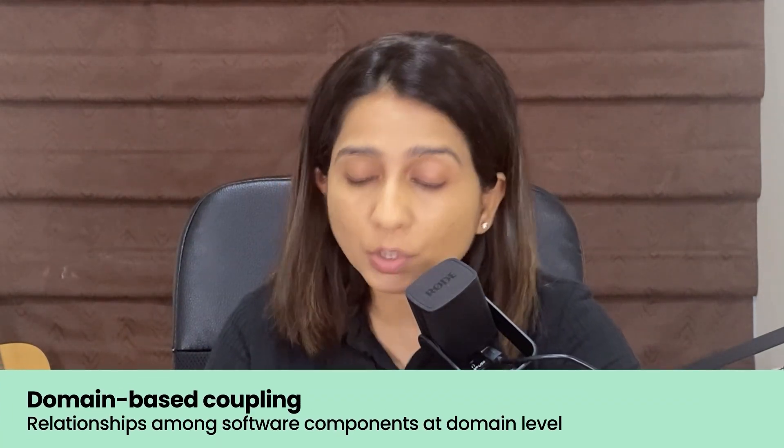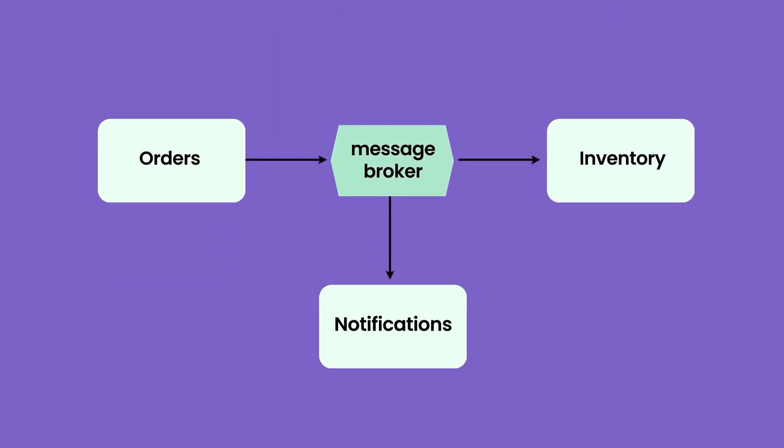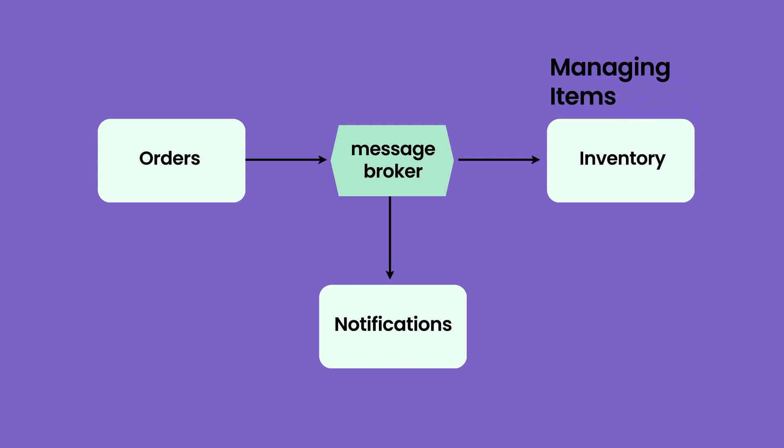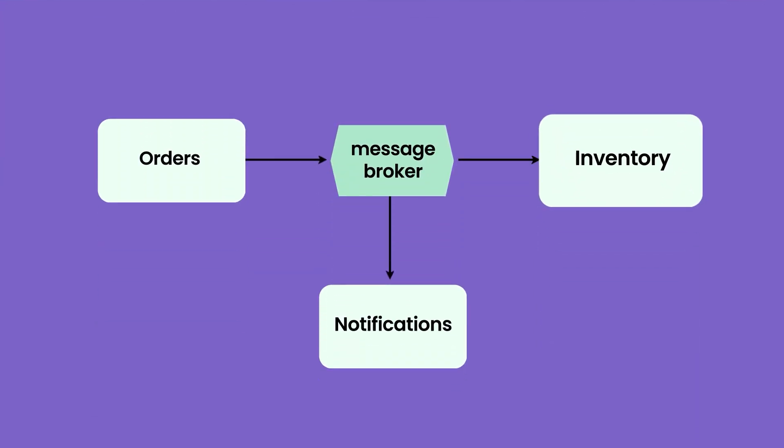However, the notification service cannot function only on the basis of just the item ID, because the work of the notification service is to send emails or other notifications to customers about the order. This also helps us understand how event-based communication helps in the reduction of domain-based coupling — the notification service is only concerned with sending notifications, the inventory service with managing inventory, and the order service with handling orders. So what kind of data is needed by different services in an event? Inventory would need item ID, whereas notifications would need communication details like customer name or email address.